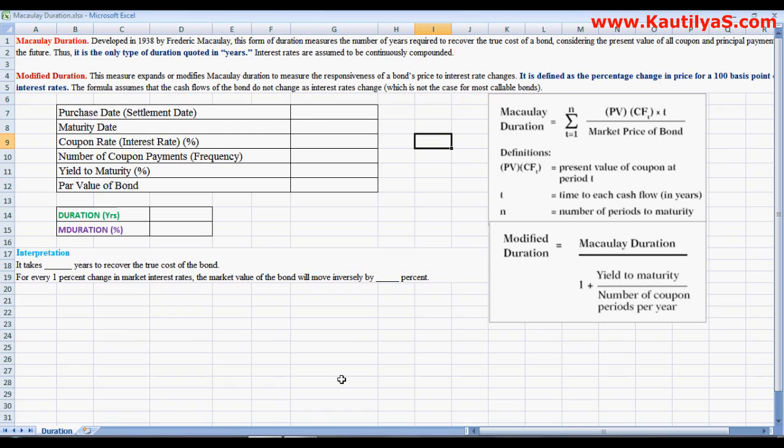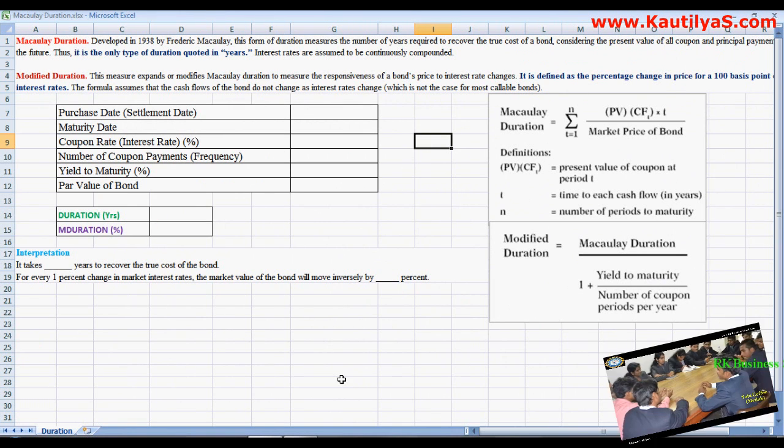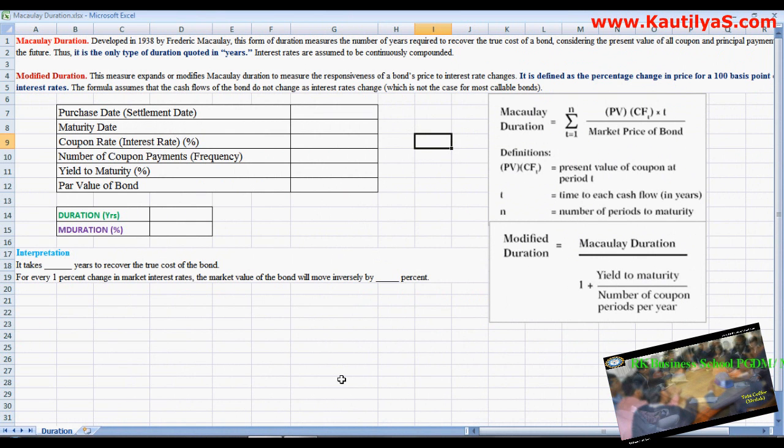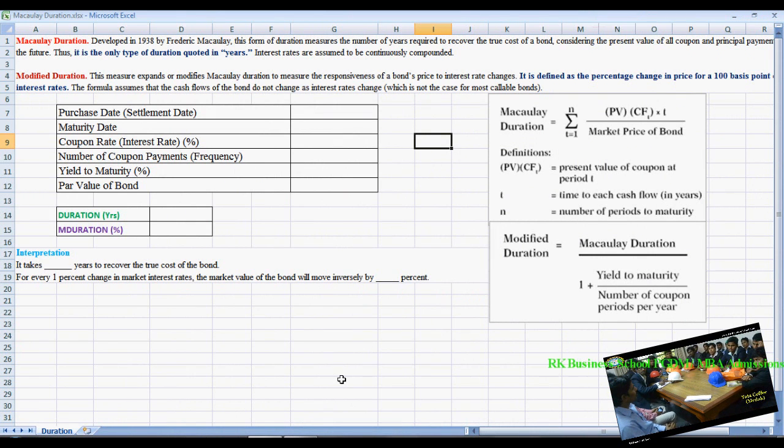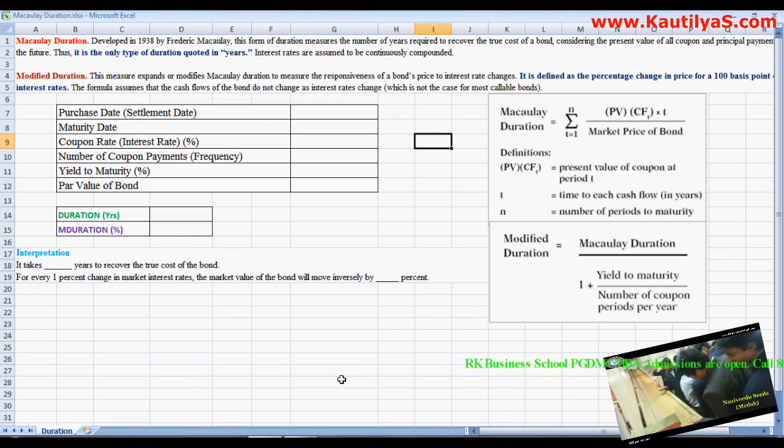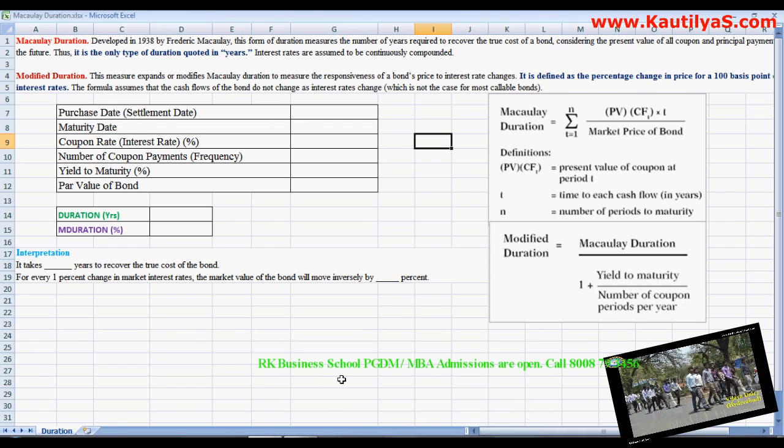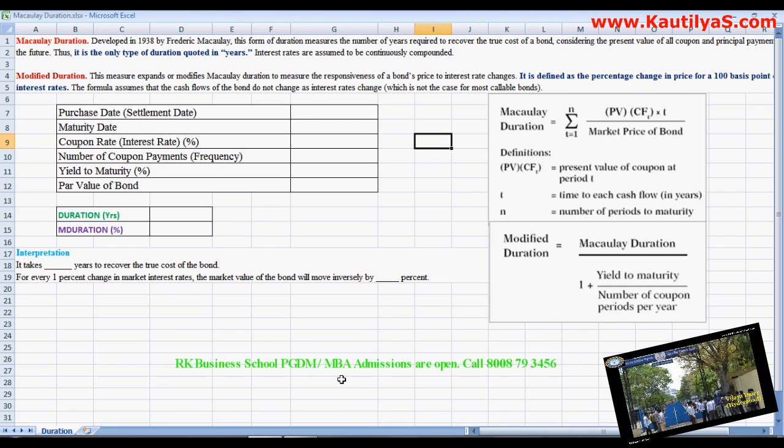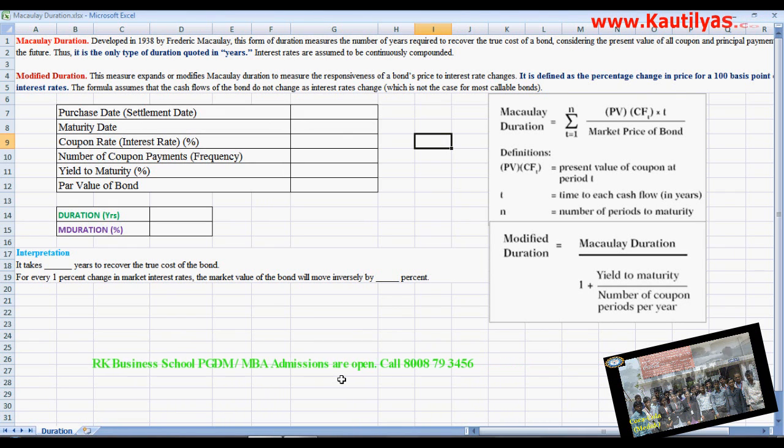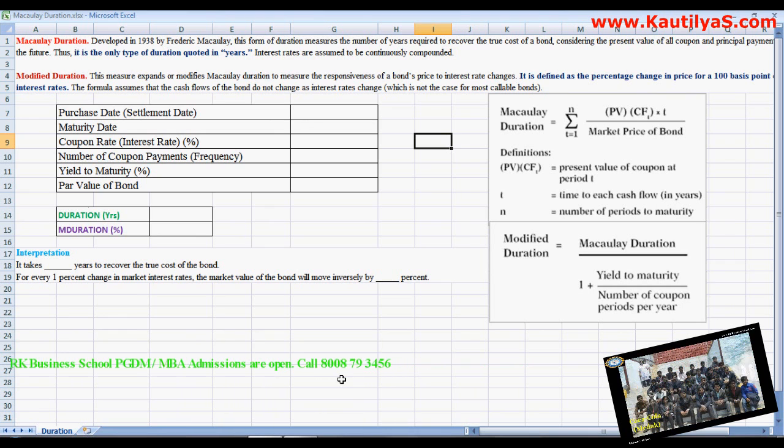In this video I demonstrate how to calculate Macaulay duration and modified duration. Macaulay duration measures the number of years required to recover the true cost of the bond, and modified duration measures the percentage change in price for 100 basis points change in interest rates.